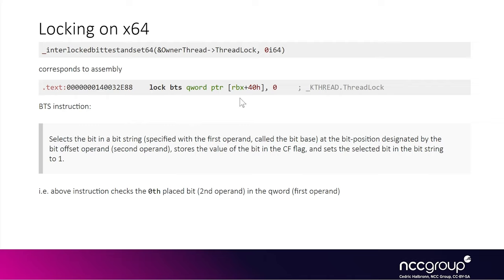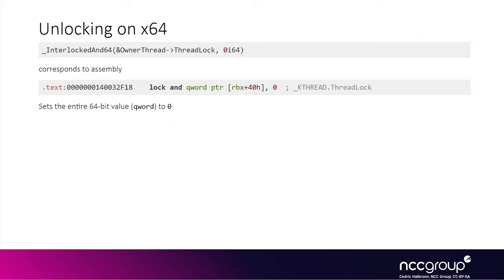Now let's look at the unlocking operation on 64-bit. In this case it's an AND operation working on the full keyword. The difference between the locking — done on a single bit (the lowest bit) — and the unlocking operation — done on the full keyword — is what makes it possible to override the previous mode, as we saw in a previous section of this course.